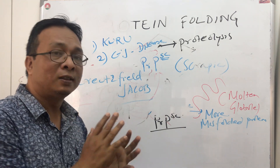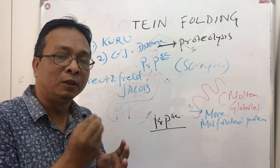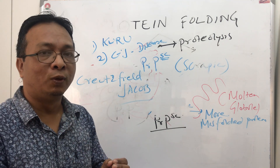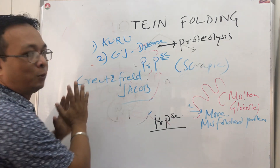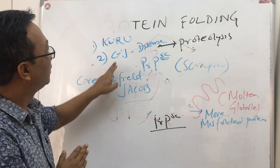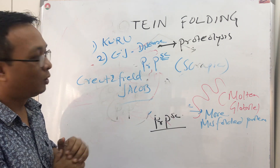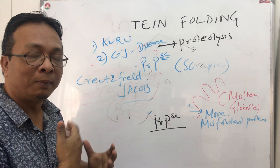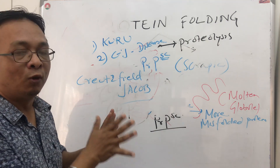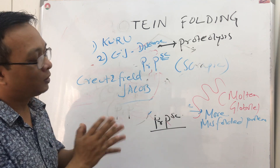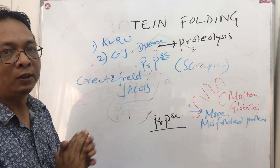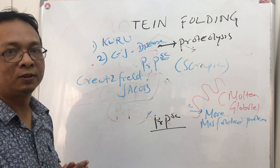Wherever abnormal misfolded proteins collect, we call this amyloid, which is a main cause of Alzheimer's disease and many other neurodegenerative diseases. When this amyloid becomes infective — capable of converting normal proteins into misfolded ones — we call it a prion protein. The recognized prion diseases include Kuru and CJD, both characterized by progressive dementia, motor, and sensory problems.